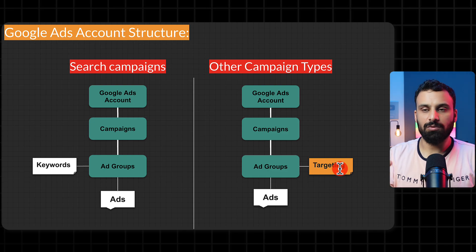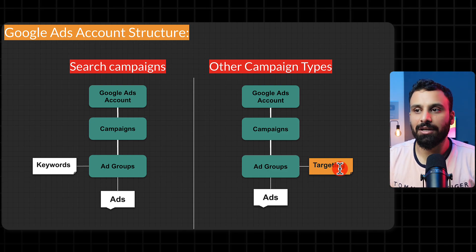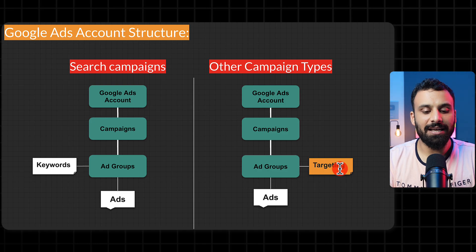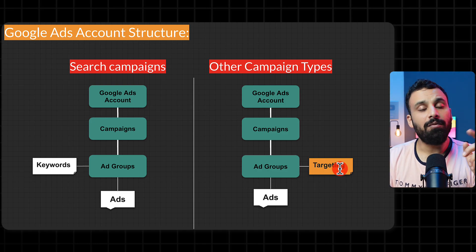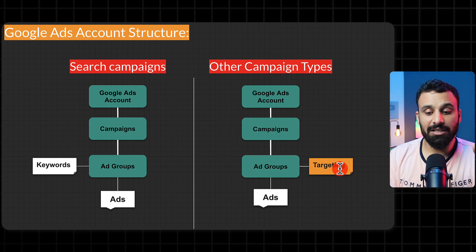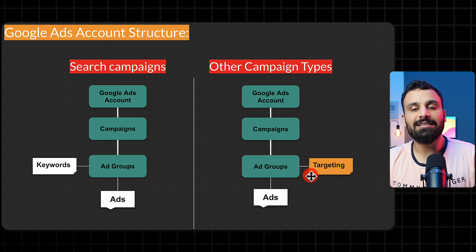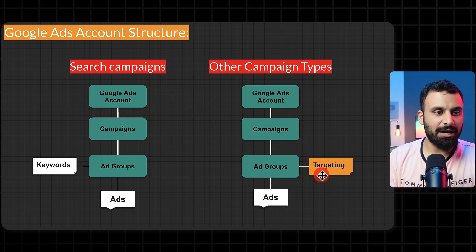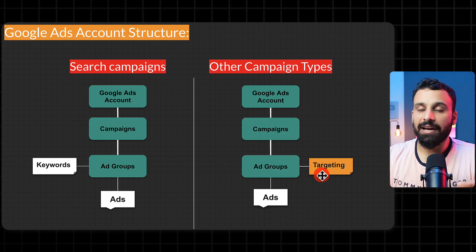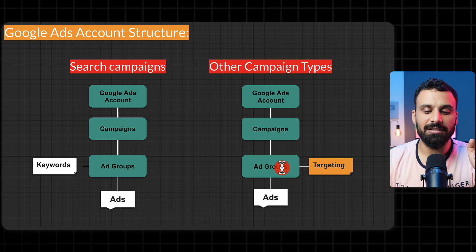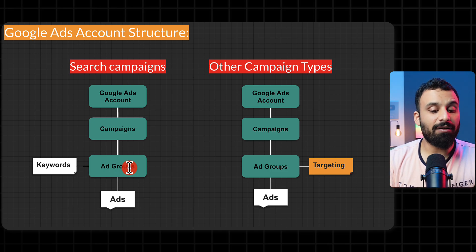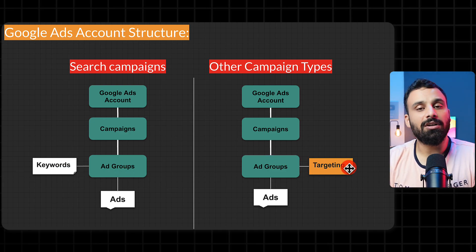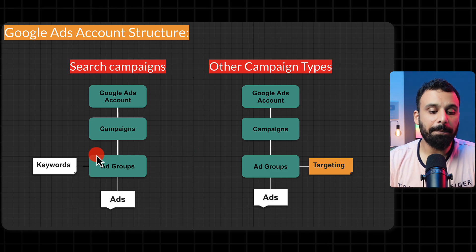The only difference between campaign types is: in search campaigns, your ad groups have keywords — for example, someone searching for 'white hat' triggers your ad. In other campaign types like video or display, your ad groups have targeting criteria — for example, show my ad to women aged 25 to 45. That's the only difference: search uses keywords, other types use targeting.